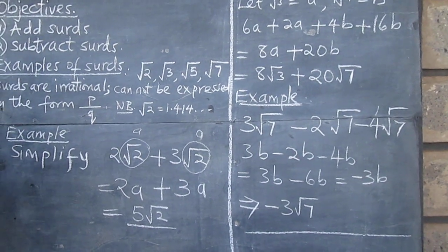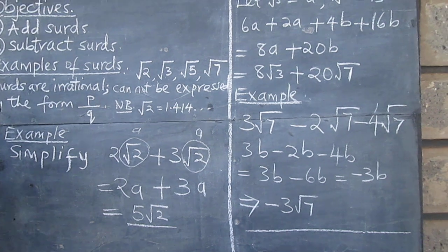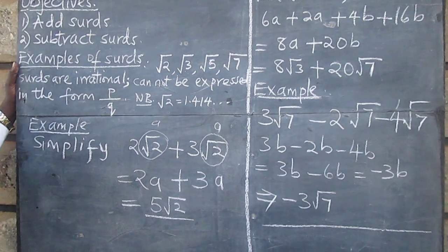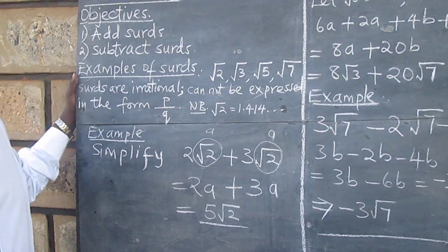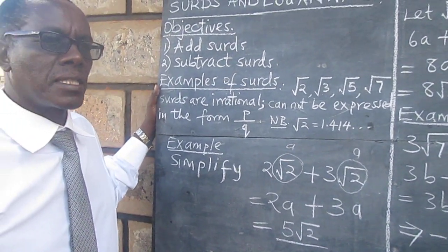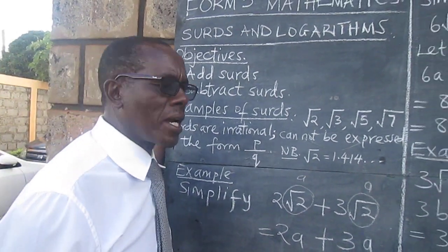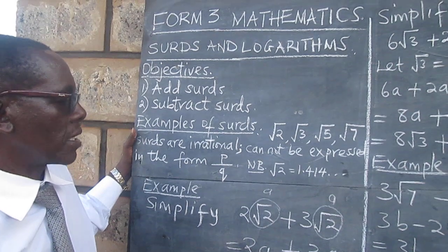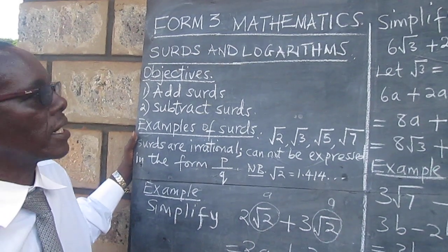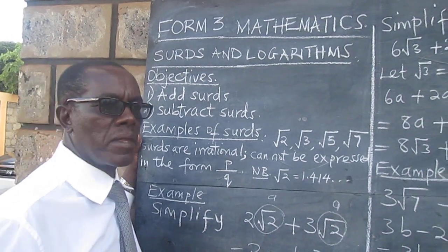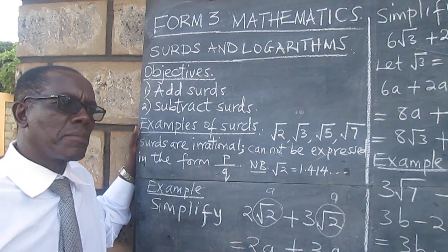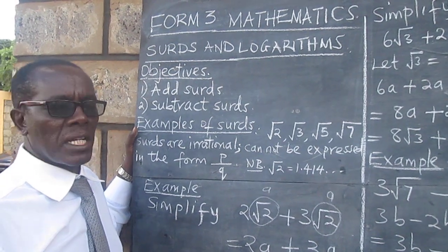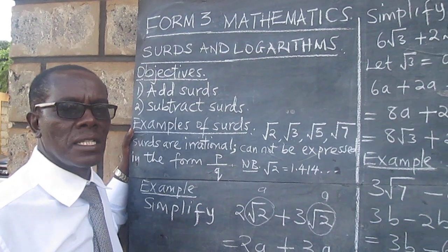So, it is clear that whenever we are adding or subtracting surds, it is good to treat them like they were letters, like the ones we work with in algebra, and simplify them as in these examples that we have just done. We would like to stop there. Remember to subscribe so that in the next lesson, we can look at multiplication and division of surds together.